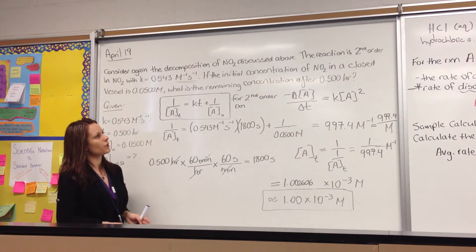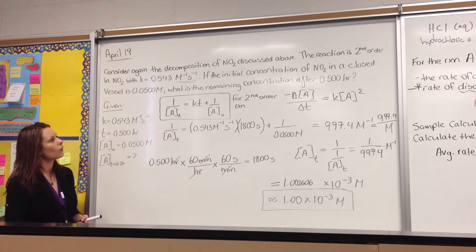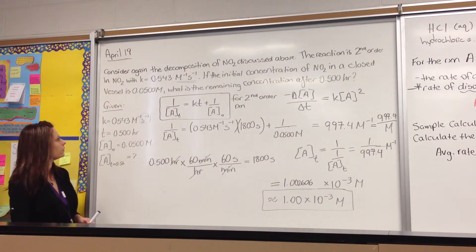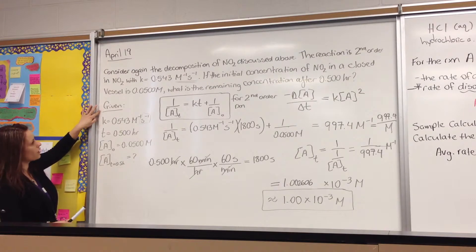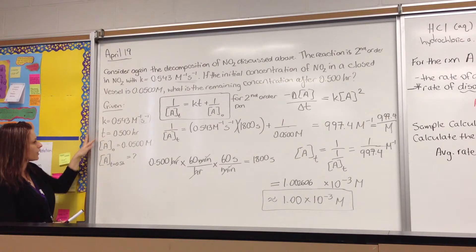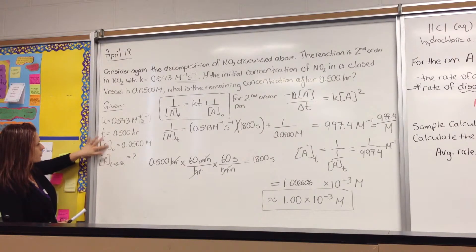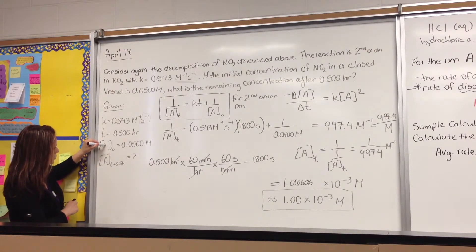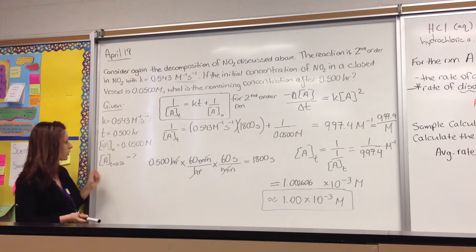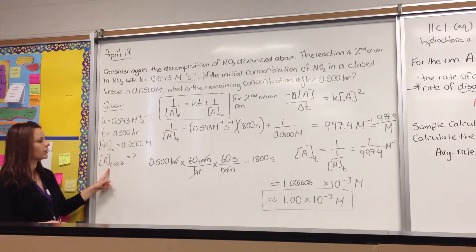Okay, so if the initial concentration of nitrogen dioxide in a closed vessel is 0.0500 molar, what is the remaining concentration after half an hour? So I wrote out what's actually given to us. We are given the rate constant, 0.543 per molar per second. Time is half an hour. We're given A-naught, the initial concentration of NO2. I write A for simplicity, but it means the exact same thing. So the initial concentration of NO2 is 0.0500 molar, and we are asked what is the concentration of NO2 after half an hour.